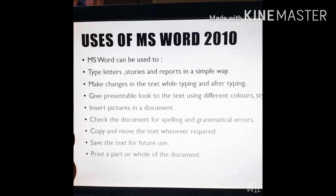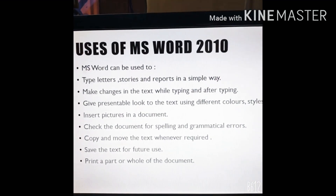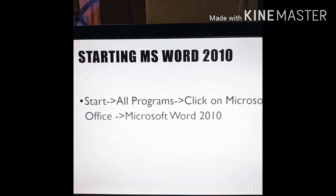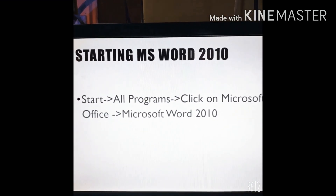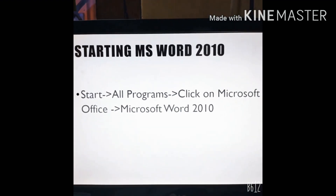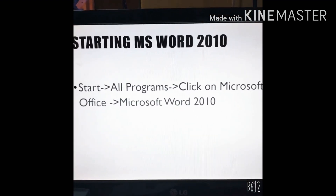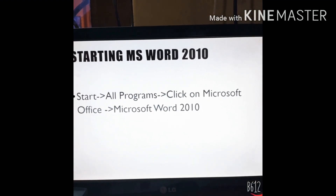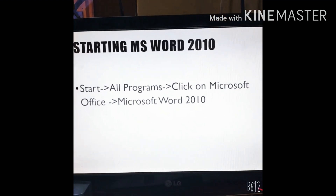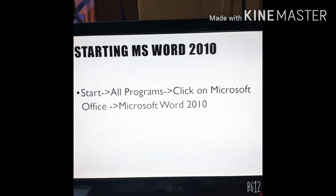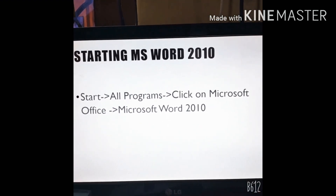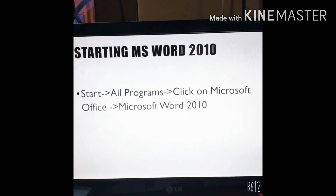So first, how will you enter into MS Word? Starting MS Word 2010: go to Start, then All Programs, click on Microsoft Office, and from there select Microsoft Word 2010.